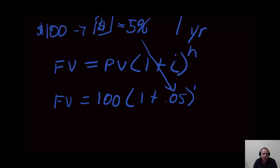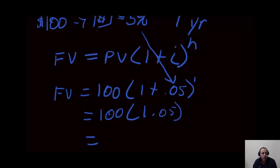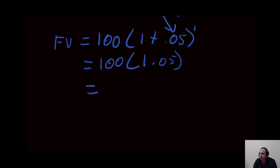And this is a simple calculation, so that's going to be 100 times 1.05. Just add them together, and that's going to total up to $105. So our future value at the end of the first year is $105.